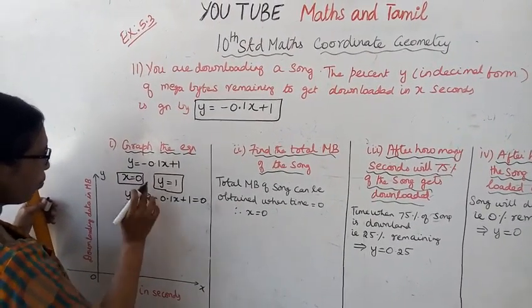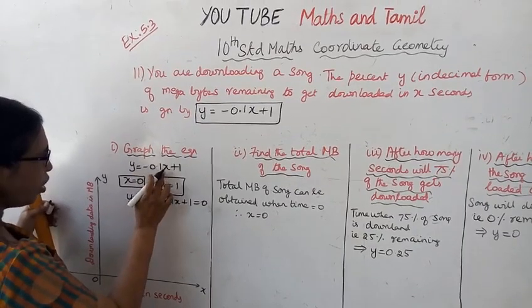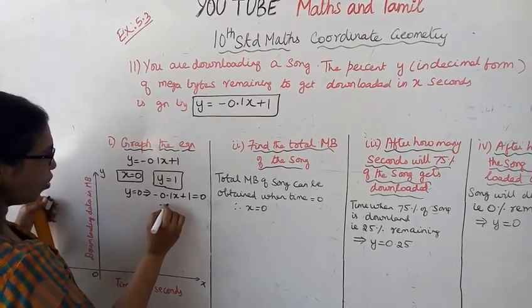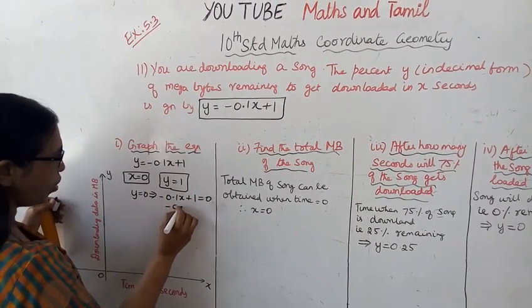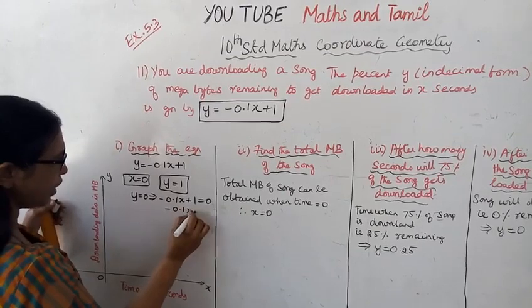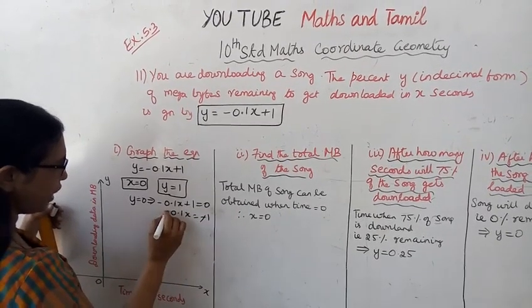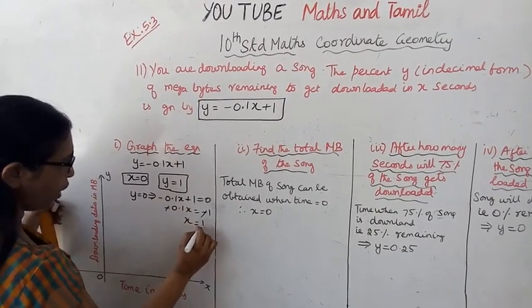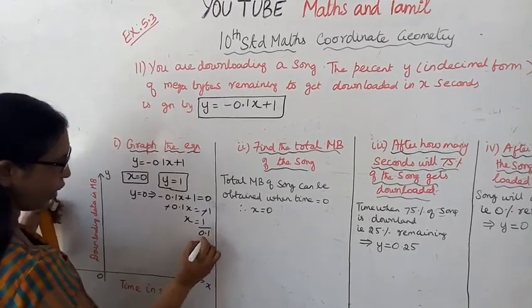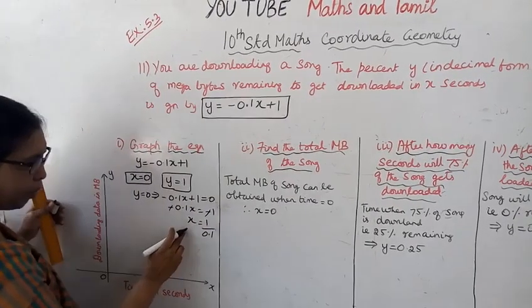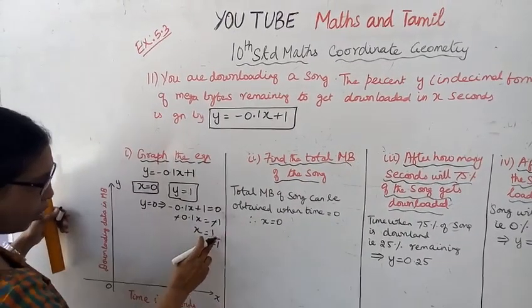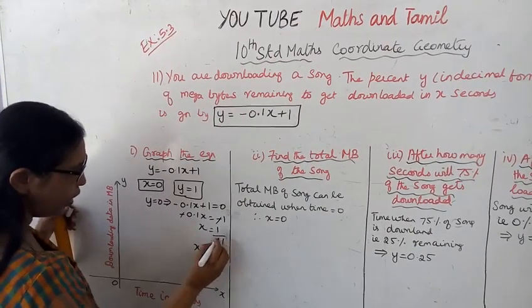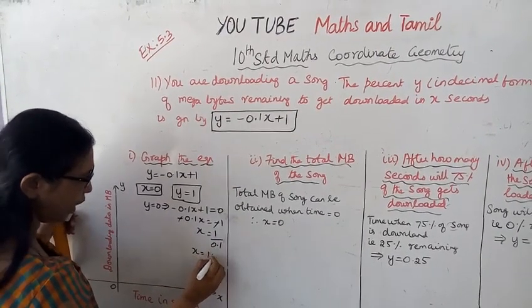When y is 0, then minus 0.1x plus 1 equal to 0. So minus 0.1x equal to minus 1. The negatives cancel. So x equal to 1 by 0.1. To simplify this decimal, multiply numerator and denominator by 10.